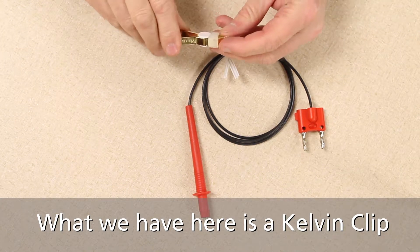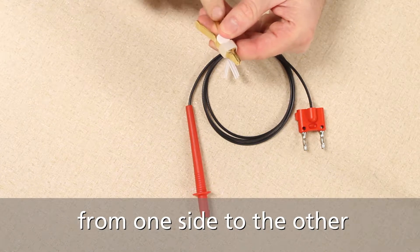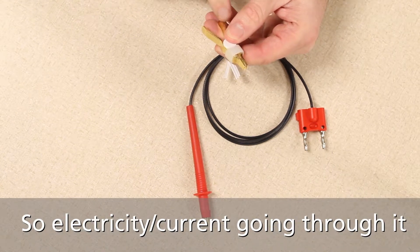What we have here is a Kelvin clip. Kelvin means that it's isolated from one side to the other, so electricity or current going through it.